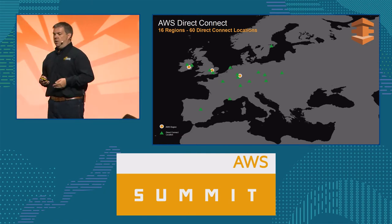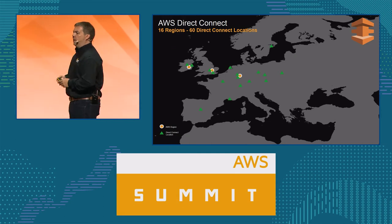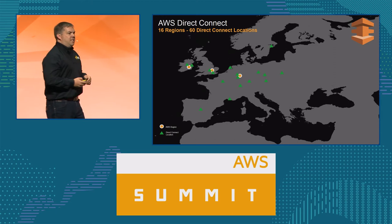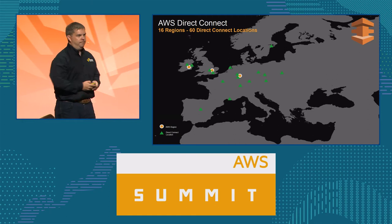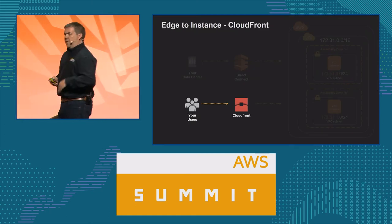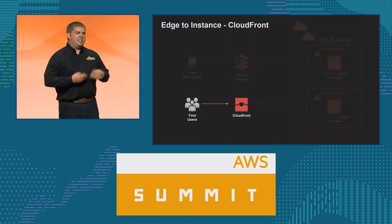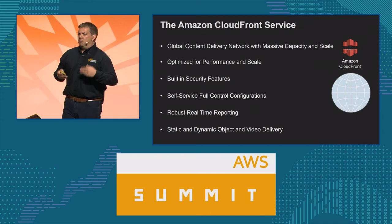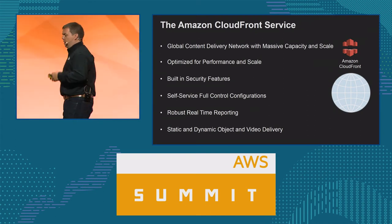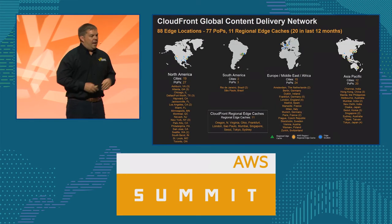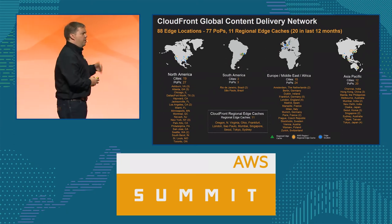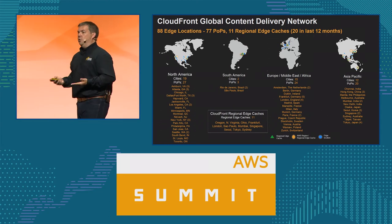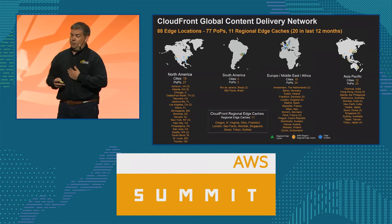All of these Direct Connect locations use the Amazon Global Network to connect back to the associated AWS region. What about your users and customers consuming content that you'd like to cache at the edge of our network? This is where CloudFront fits. CloudFront is our content delivery network, optimized for performance and huge scale to provide your content close to your users. We have 88 edge locations around the world: 77 are actual points of presence, and 11 are what we call regional edge caches. Most of those are also connected to the Amazon Global Network, reaching back into the associated regions where your content is held.